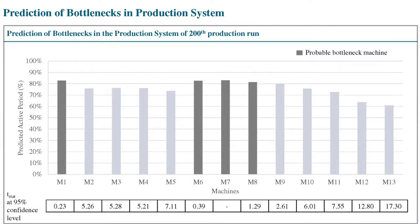The next step is to predict the bottlenecks from these predicted active periods. The dark grey bars in the slide represent the predicted bottlenecks for the 200th production run. In other words, out of the 13 machines, machines M1, M6, M7, and M8 are the ones that need to be watched in order to improve the productivity of the production system.